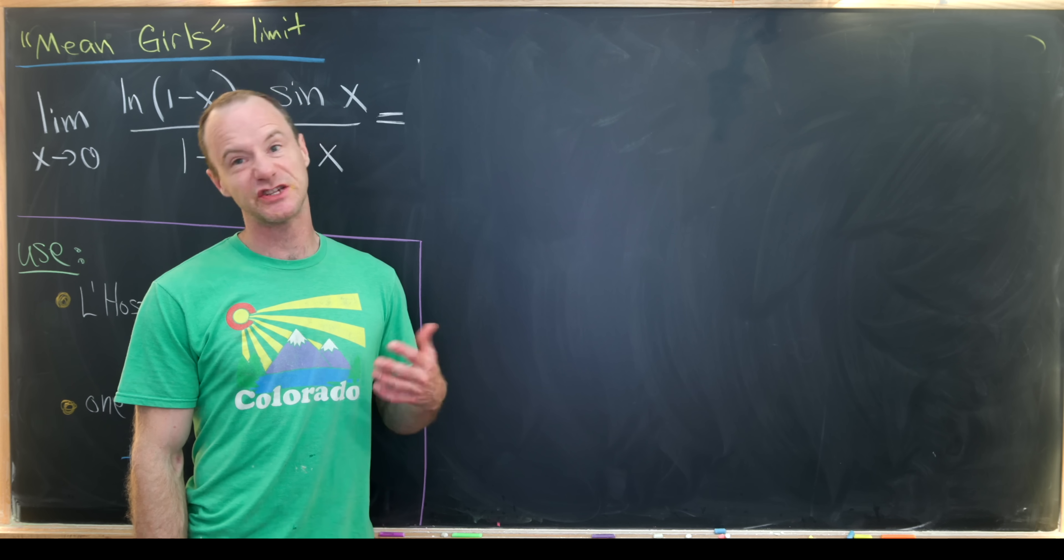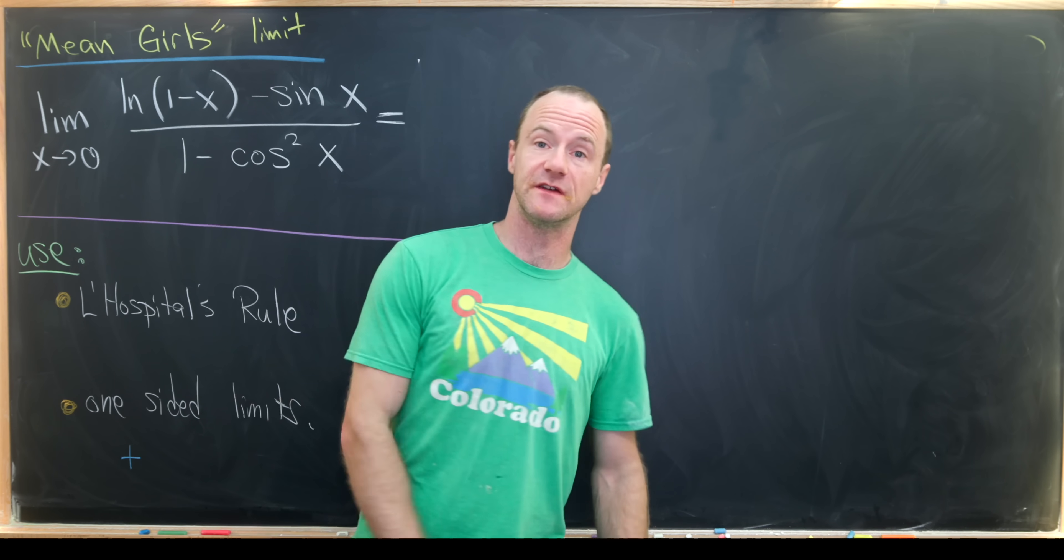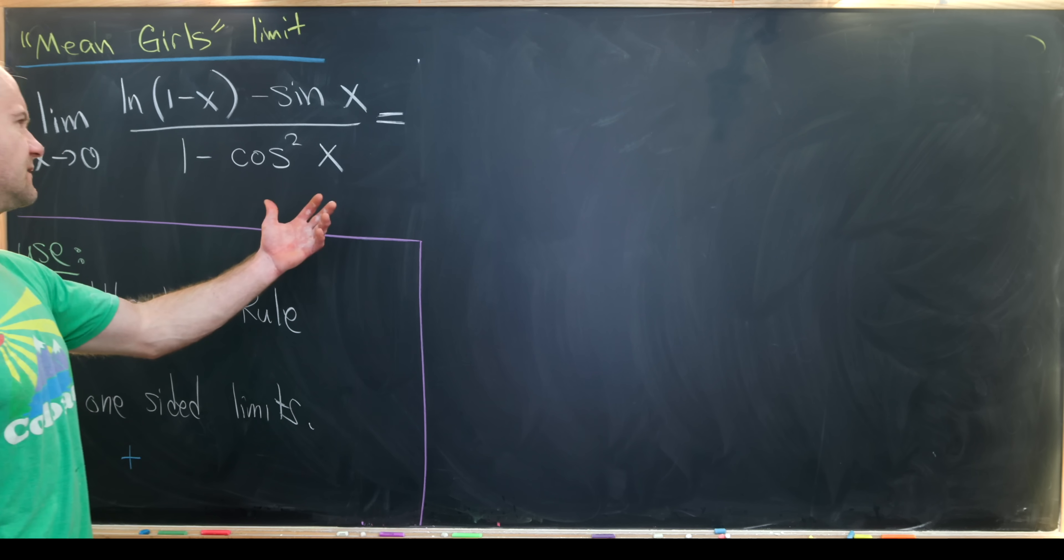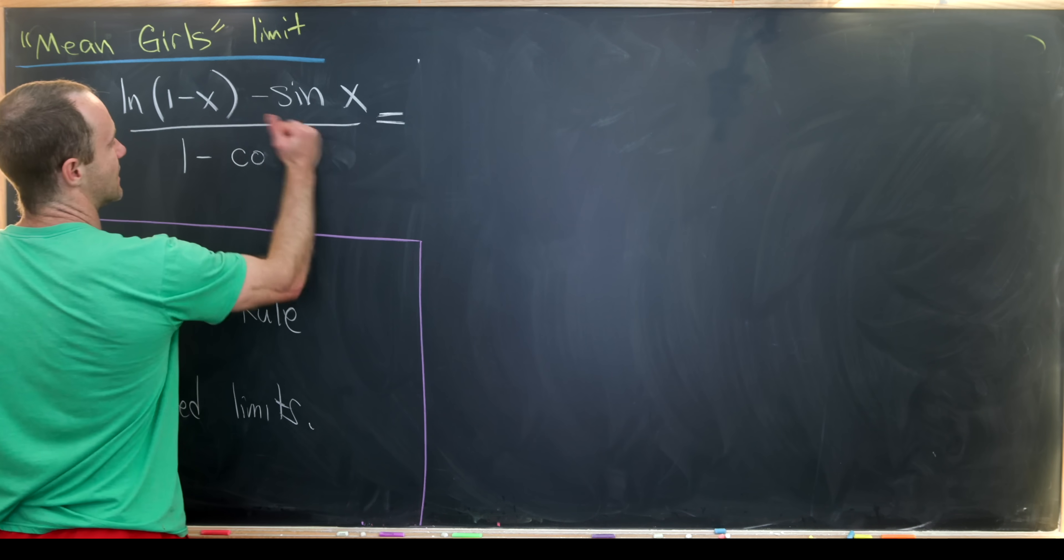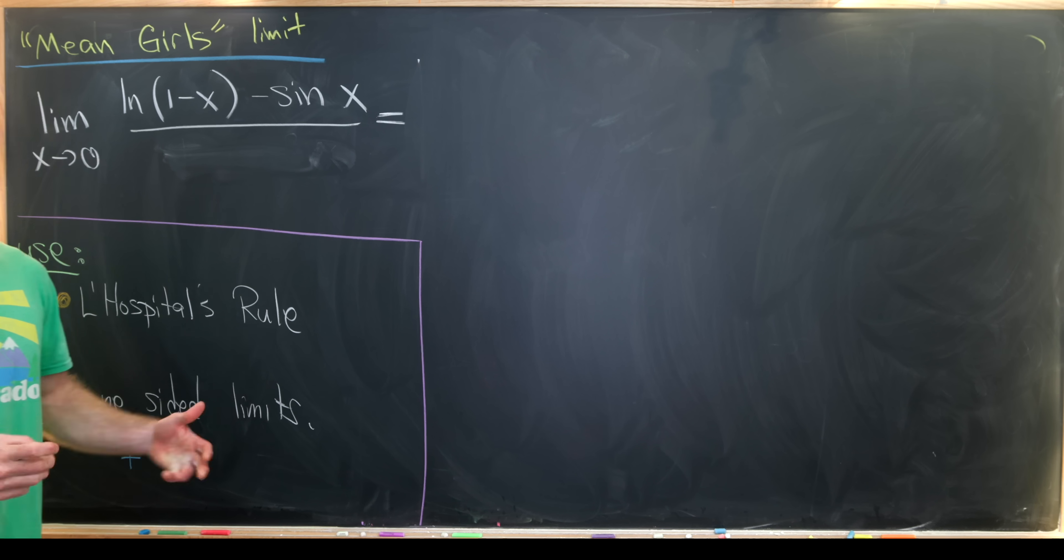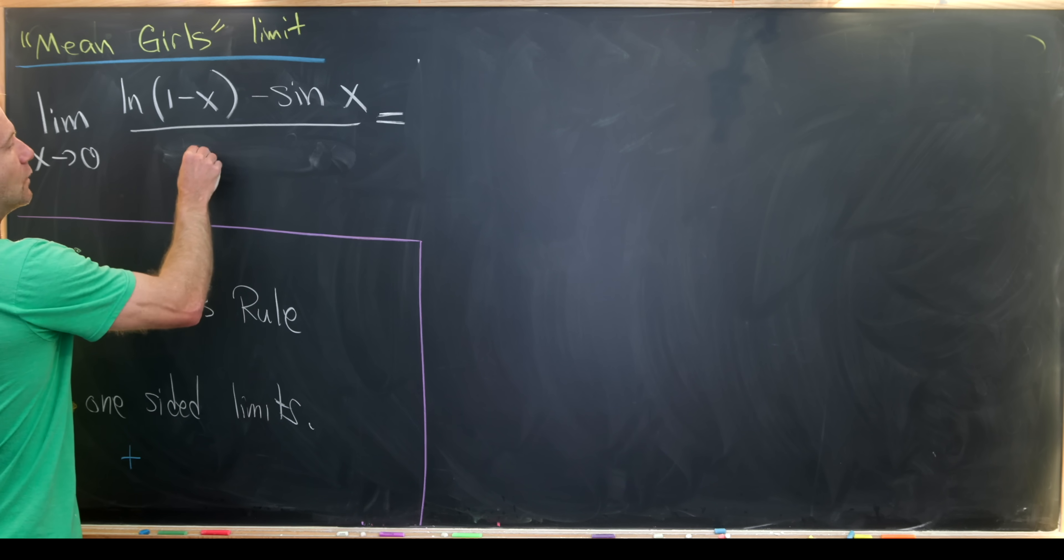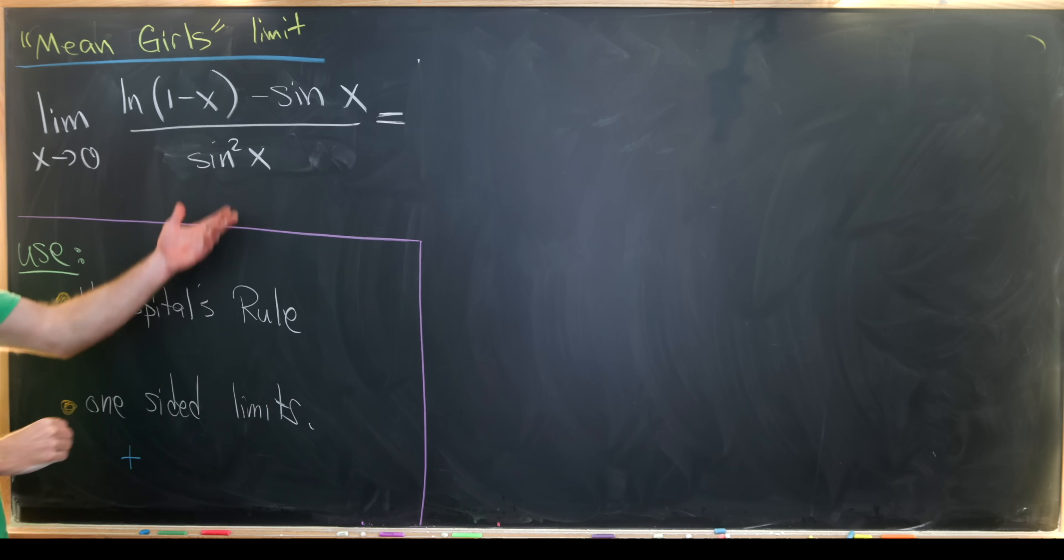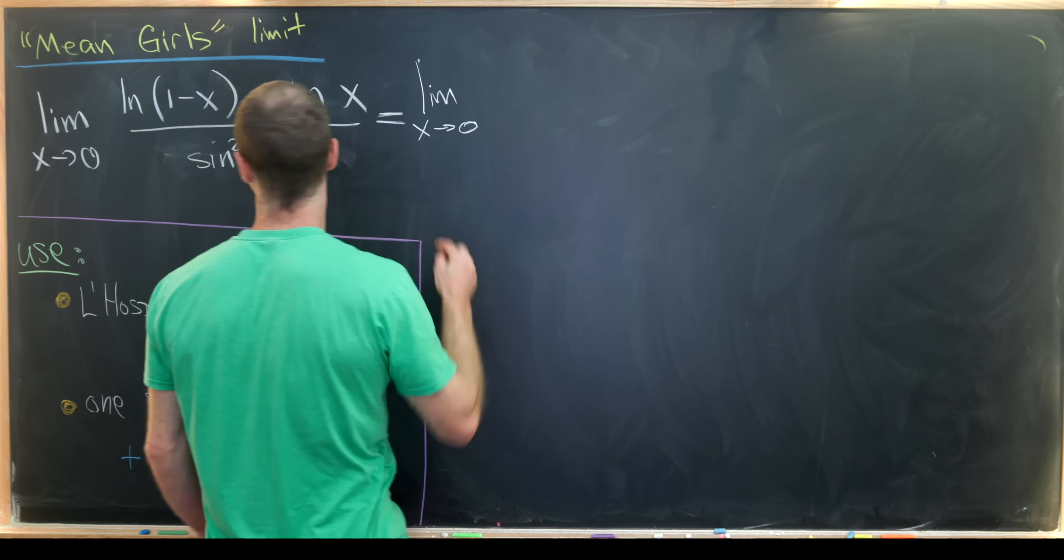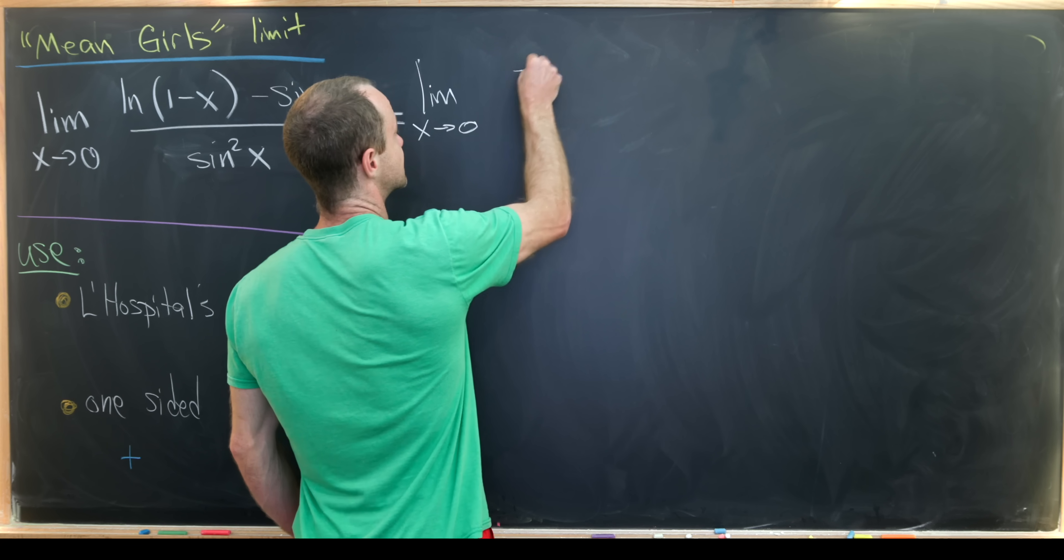So now we're going to do a quick sketch, maybe not a careful solution, of the evaluation of this limit using Taylor series. We'll use the knowledge that the Taylor series for the natural log of 1 minus x has a certain form, which is generally taught in a Calculus 2 class, same with sine. We'll work out sine squared as well, and I'll skip that first step where we use the trigonometric identity.